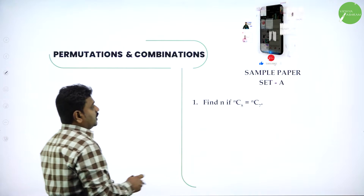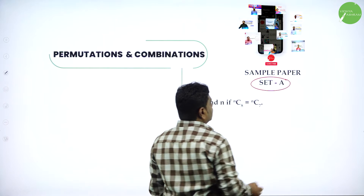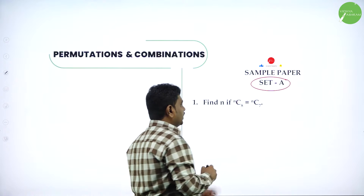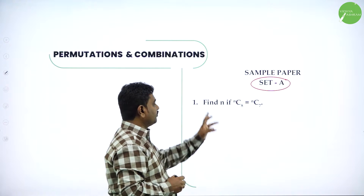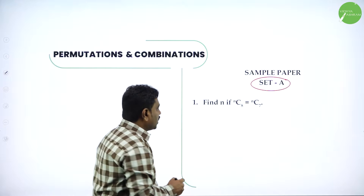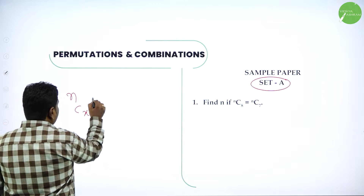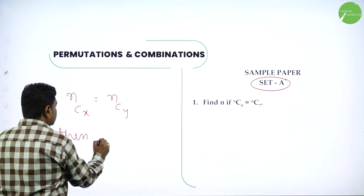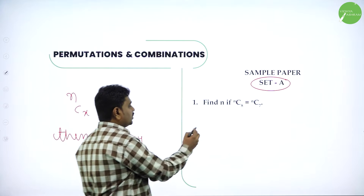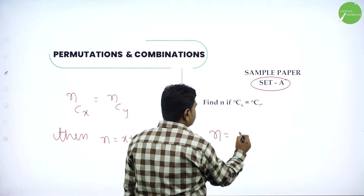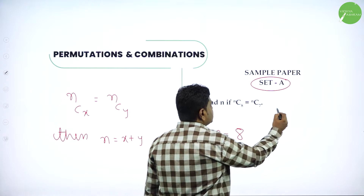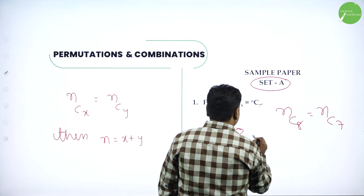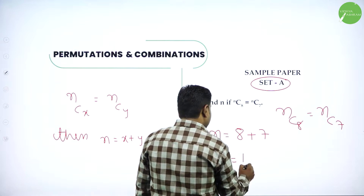I'm dividing into Set A and Set B. If you take a sample paper, you'll have one question like this. The problem of the kind: find N, if NC8 is equal to NC7. If NCX is equal to NCY, then we have a format: N value is X plus Y. So therefore, N is 8 plus 7, which gives you 15.